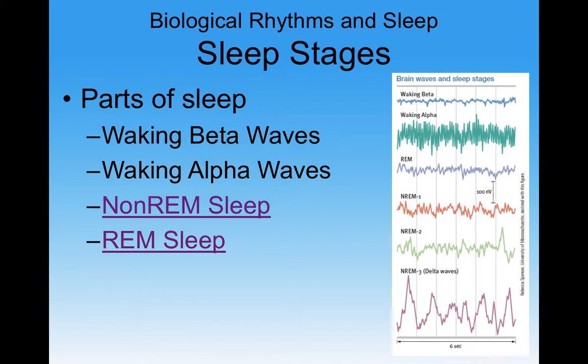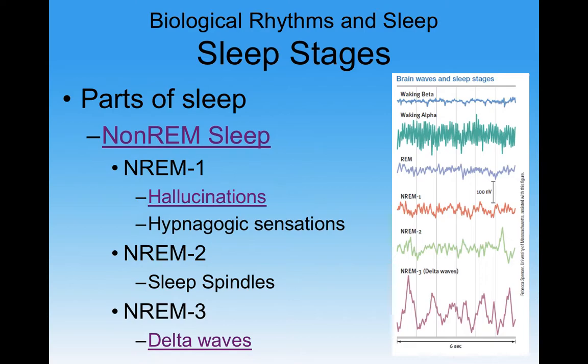To review: waking beta waves are just normal brain functioning; waking alpha waves are when we're awake but very relaxed and almost falling asleep. You can see the difference between beta and alpha waves. And then stage three delta waves — very deep waves associated with deep stage three sleep.